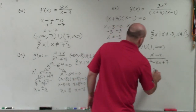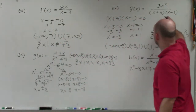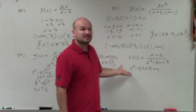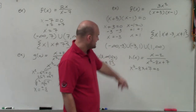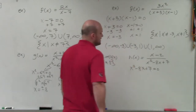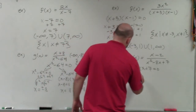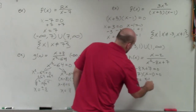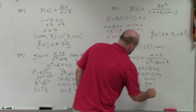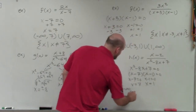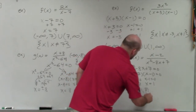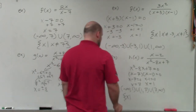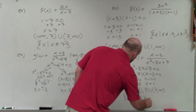Setting x squared minus 8x plus 7 equals 0: this one requires factoring or the quadratic formula, but fortunately it's factorable. Two numbers that multiply to 7 and add to negative 8 are negative 7 and negative 1. So x minus 7 times x minus 1 equals 0. Applying the zero product property gives x equals 7 and x equals 1. The domain is negative infinity to 1, union 1 to 7, union 7 to infinity. Or: all real numbers x such that x cannot equal 7 and x cannot equal 1.